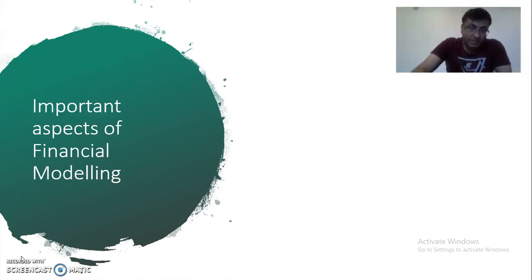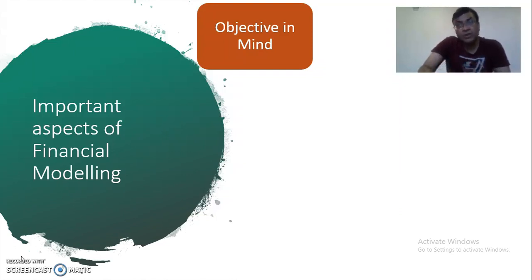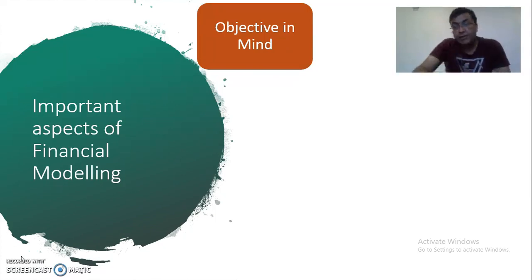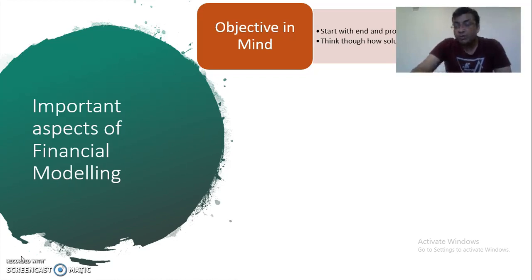The very first step in financial modeling is to understand what your objective is — what you want to achieve — because that will determine what kind of data input you need and what the relationship is between the output decision and the input data. That way you can design the formulas, the flow of calculations, and achieve the decisions you want to make. We start with the end in mind and then think through how the solution will be achieved.